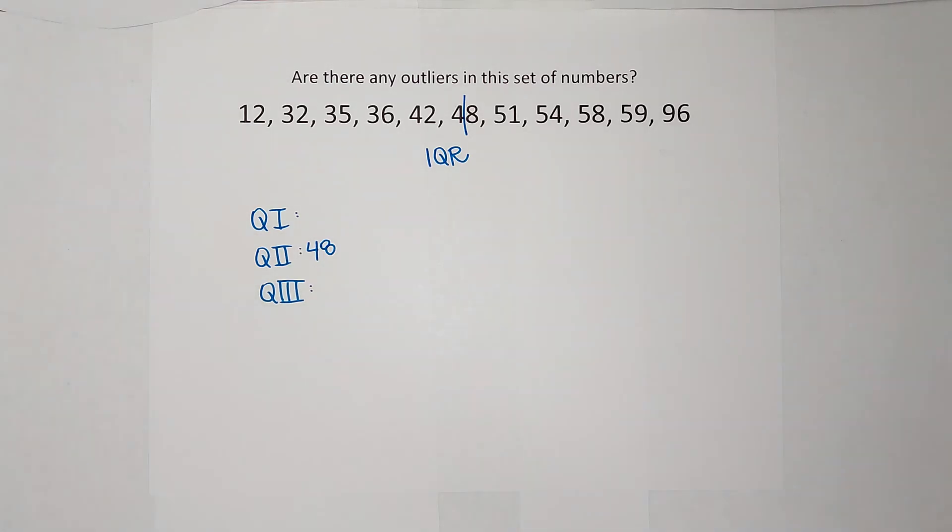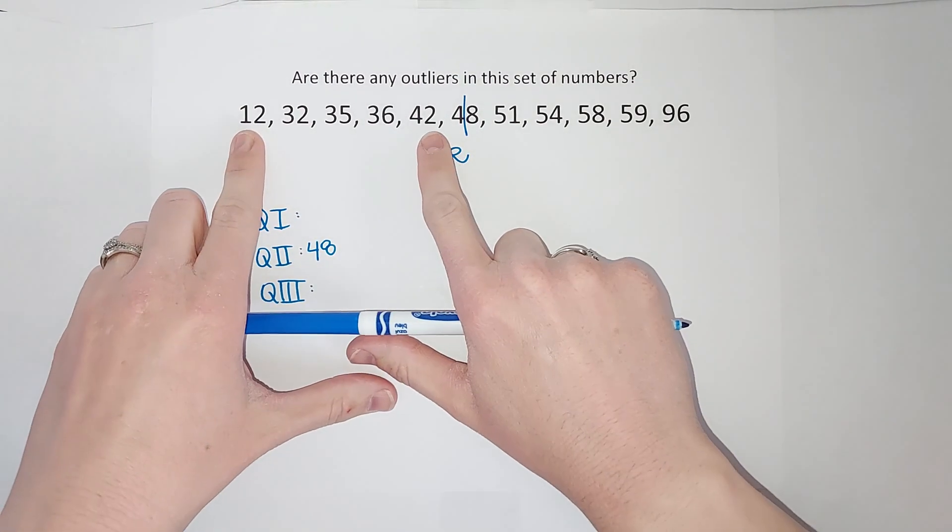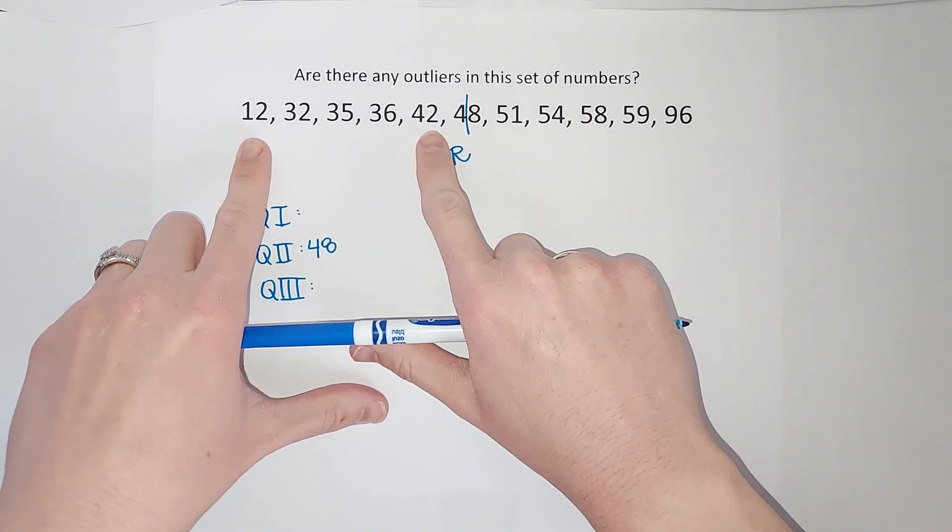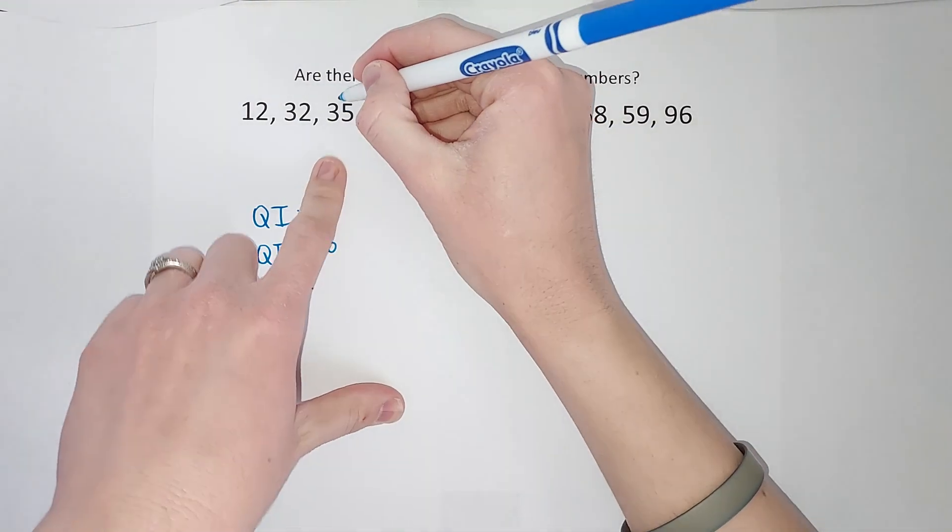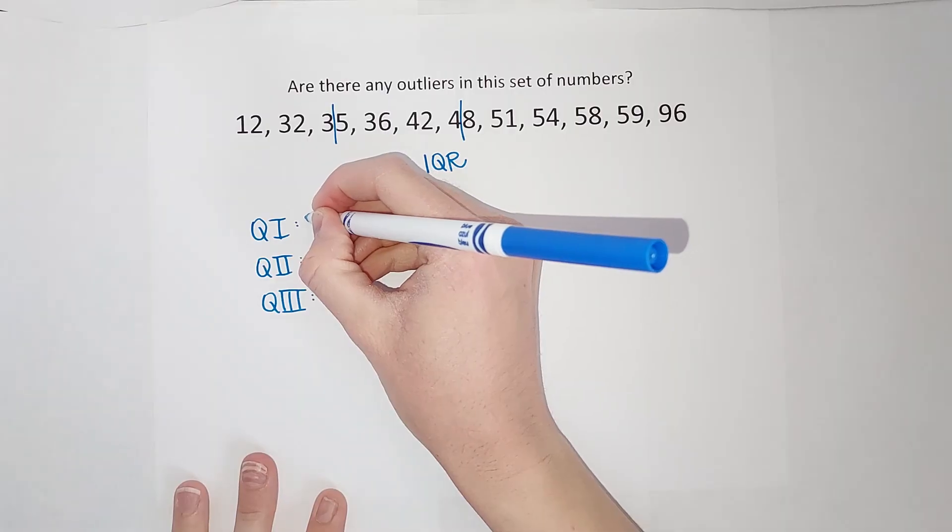To find my first quartile, I'm going to find the middle of that bottom half. I'm going to find the middle of this bottom half. Dot, dot, dot, dot, 35. There is 35.